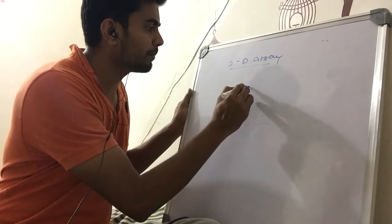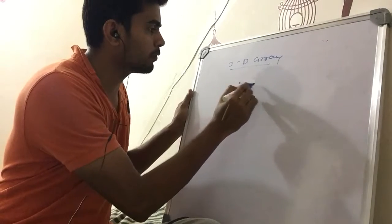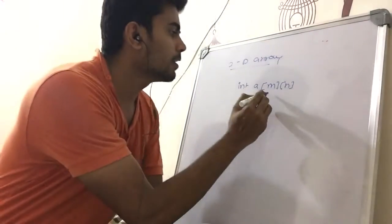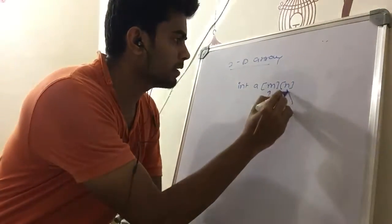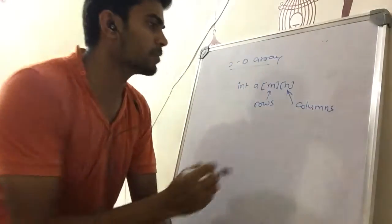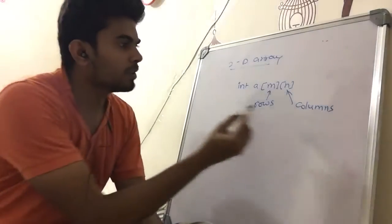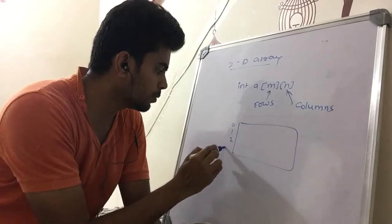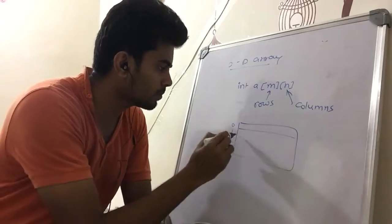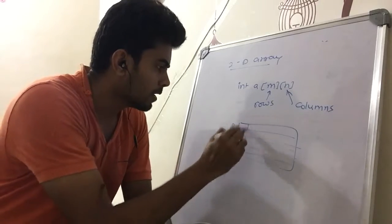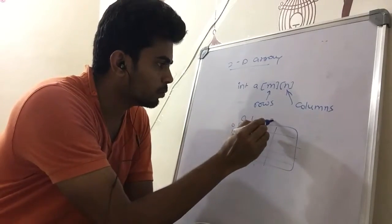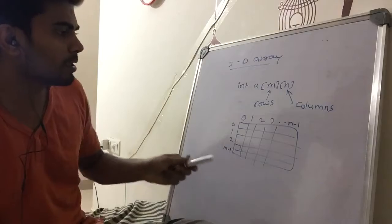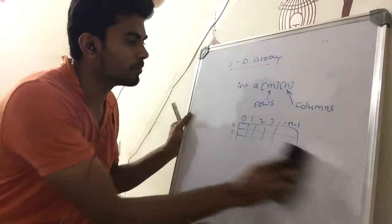A 2D array is declared as m×n where m is the number of rows and n is the number of columns. So m rows means 0, 1, 2 up to m-1 rows, and 0, 1, 2, 3 up to n-1 columns. Total n columns and m rows — this is how a 2D array looks.